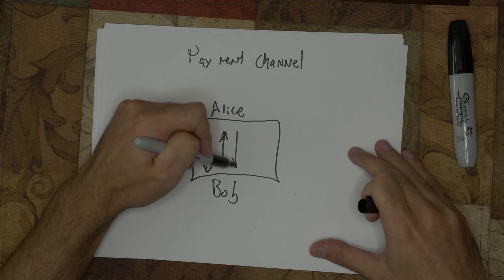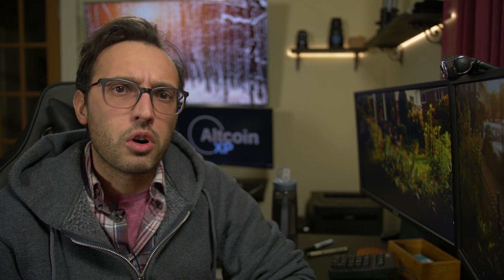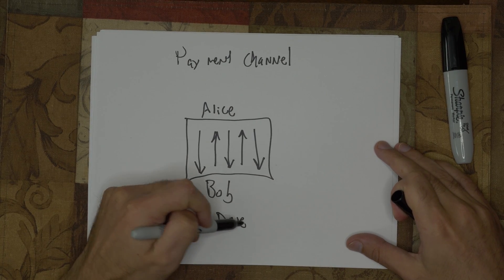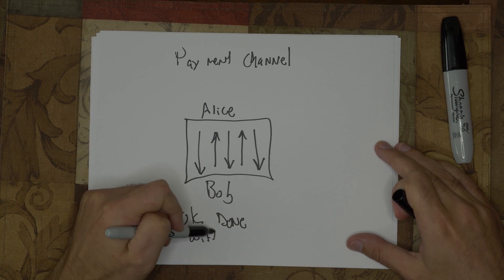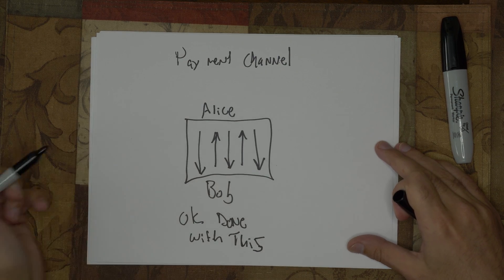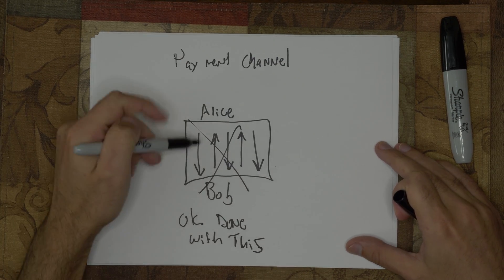Since the Ether is off of the network, it can be transferred between both parties as frequently as they want without incurring fees associated with writing to the blockchain. After the parties' payment interactions are finished, they can close the channel and write the final balances to the blockchain.